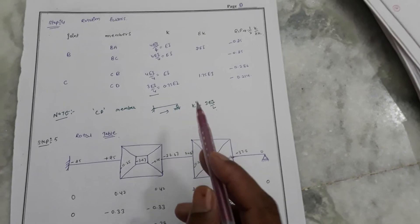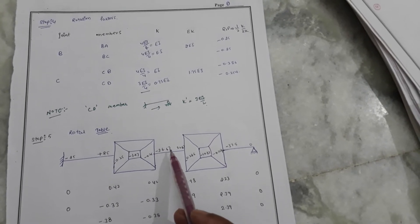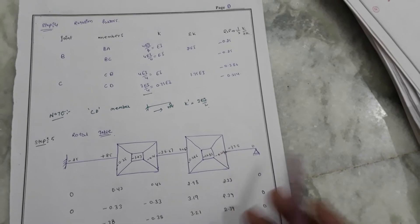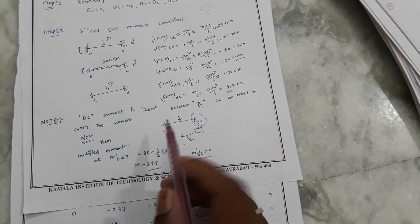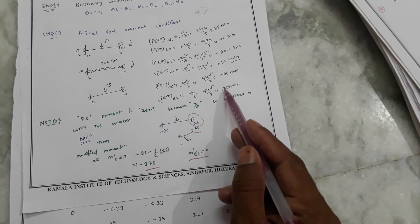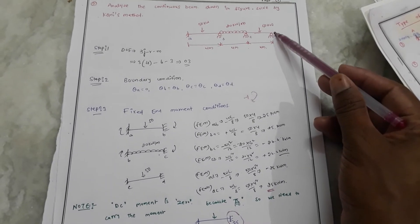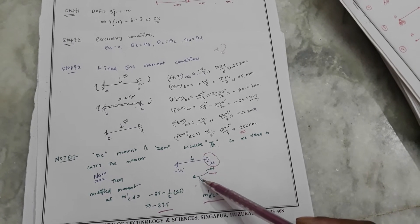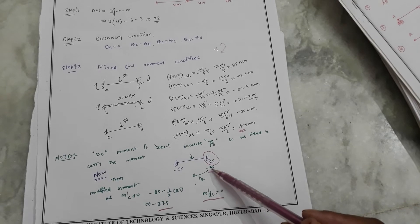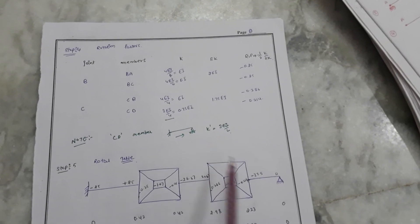The fixed end moments are: minus 25, plus 25, minus 26.67, and plus 26.67. Here we get the modified moments. From the fixed end moment condition, we balance: 25 minus 25 equals zero. Carried over: minus 25 divided by 2 gives minus 12.5, so the modified moment becomes minus 37.5. And the other end becomes zero.